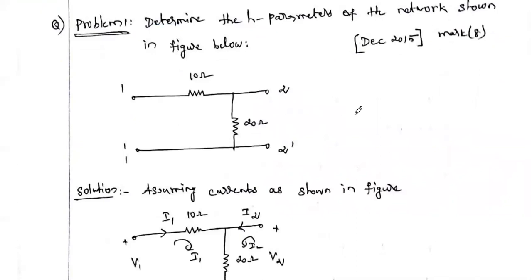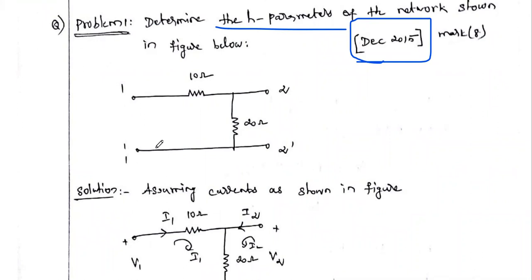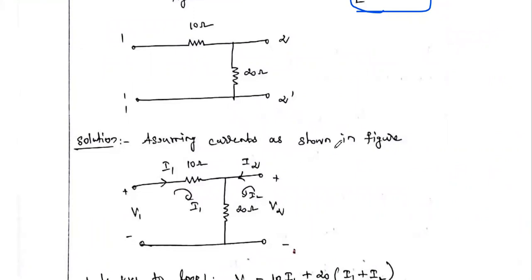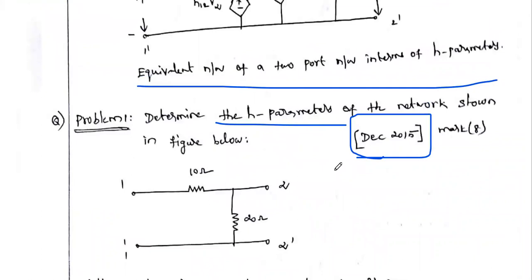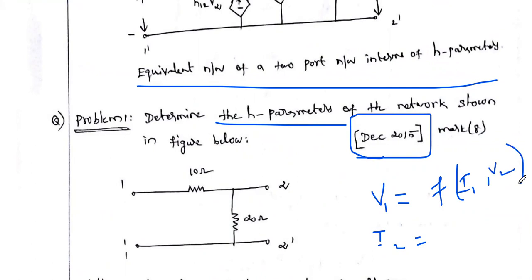Now we discuss a problem: a December 2015, 8-mark question. For the given network with port 1-1' and port 2-2', we need to determine the H-parameters. Our aim is to write two equations: v1 as a function of i1 and v2, and i2 as a function of i1 and v2.